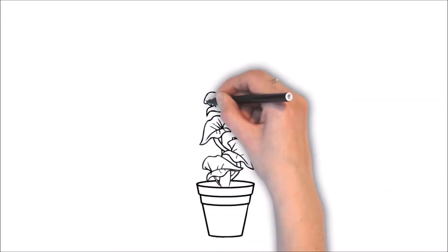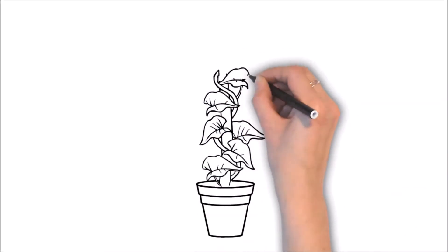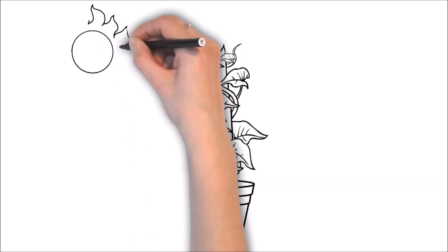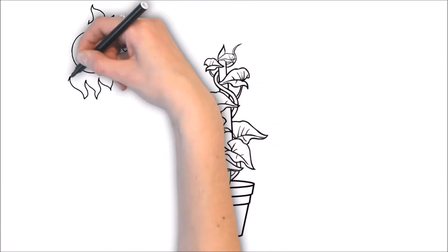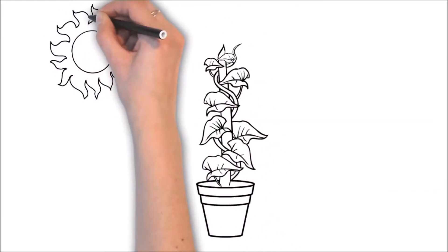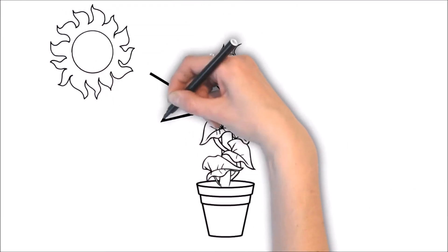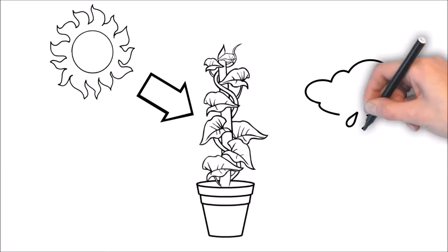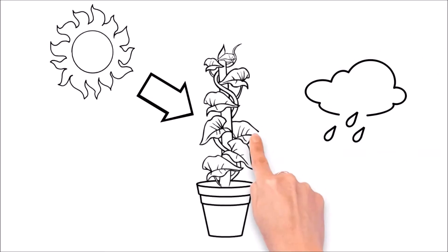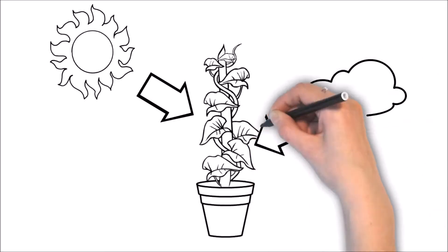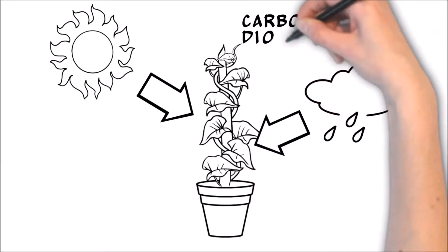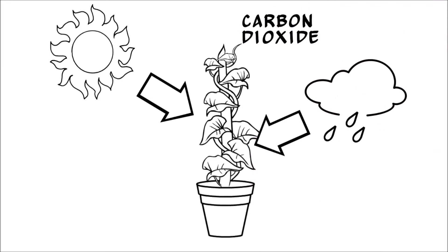In almost all food chains, we begin at the bottom with plants or other autotrophs, also known as producers, because they produce their own food from sunlight, water, and carbon dioxide through photosynthesis.